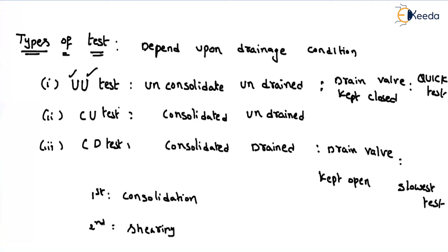For the CU test — consolidated undrained — consolidated means in the first stage the drainage valve will be in the open condition. Undrained means you are not allowing drainage, so in the second stage you keep your drainage valve in the closed position. By seeing this term, we can simply determine the position of the drainage valve.